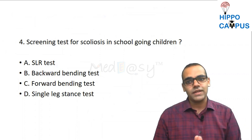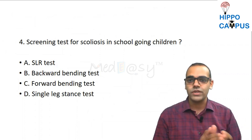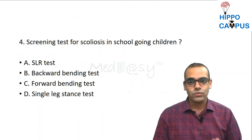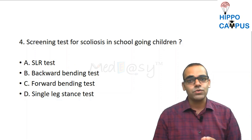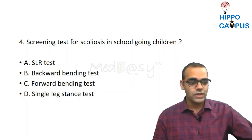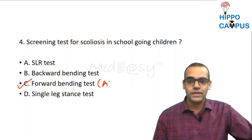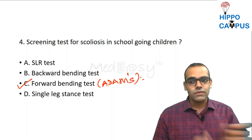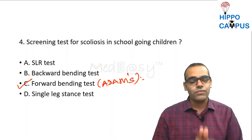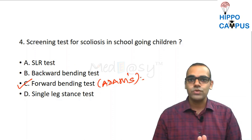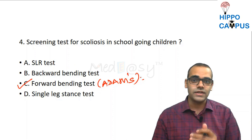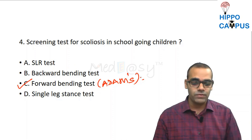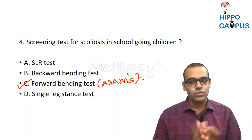Question 4: Screening test for scoliosis in school-going children. The answer is the forward bending test, also known as Adams' forward bending test. It is used to differentiate between structural scoliosis and non-structural (postural) type of scoliosis.